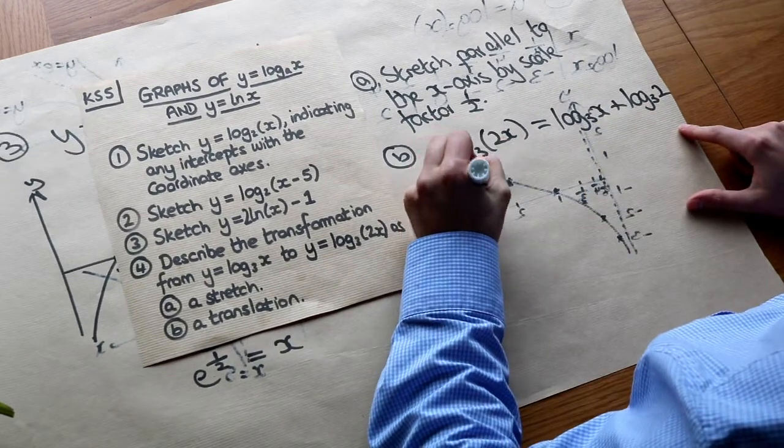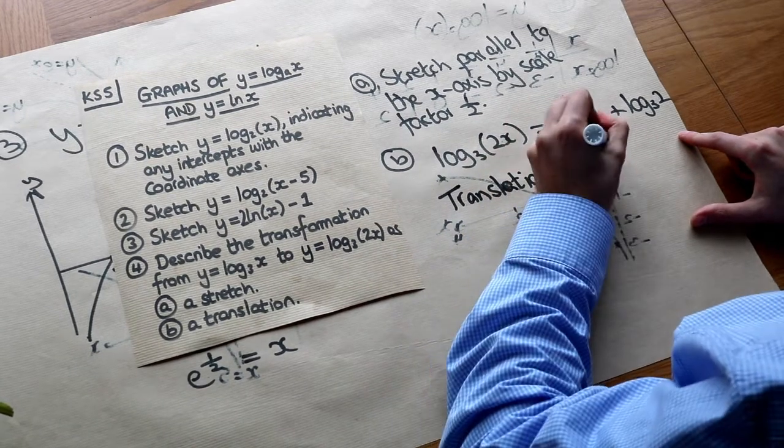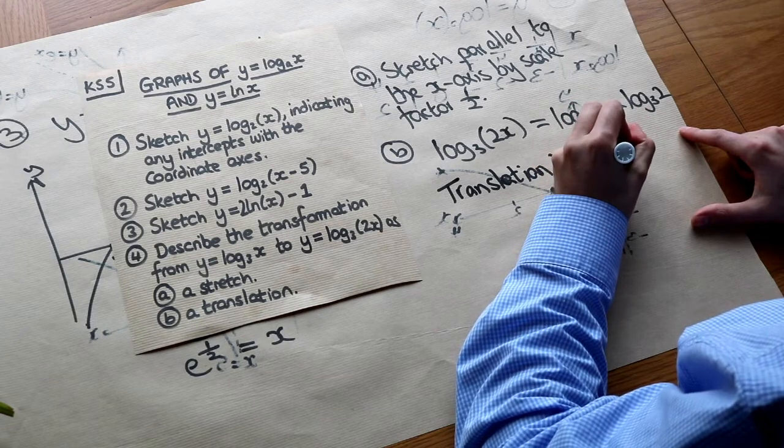So therefore it's a translation by, well the x value is not changing so it's 0 in this vector, and then the y value is log base 3 of 2.